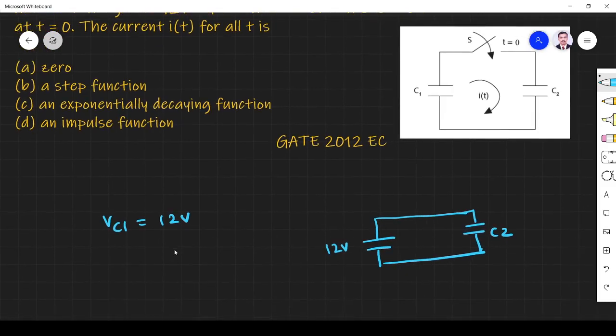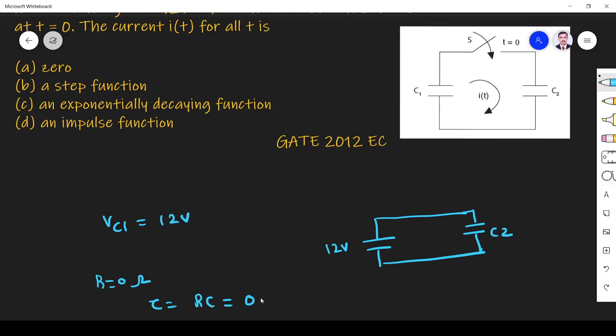What they are asking? Here you see in the circuit R equals 0. What about time constant of the circuit tau equals RC? That equals 0.